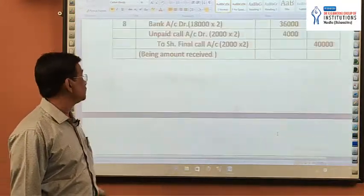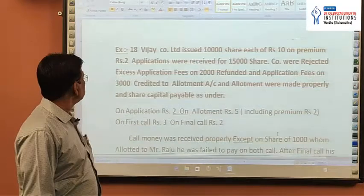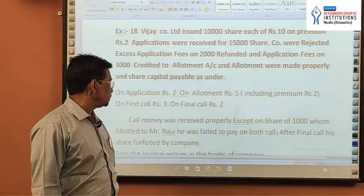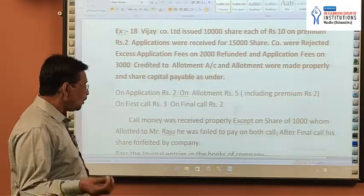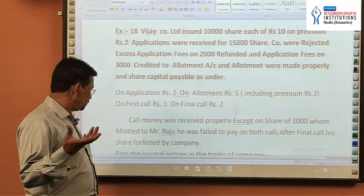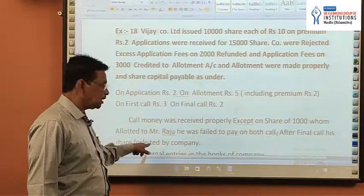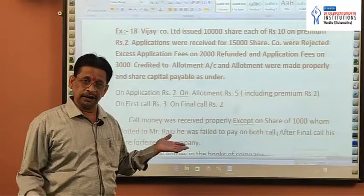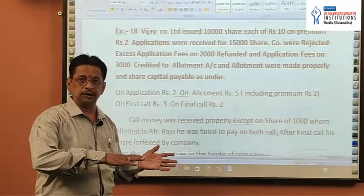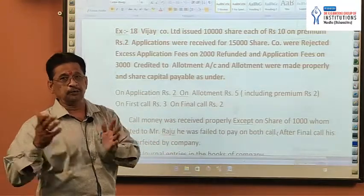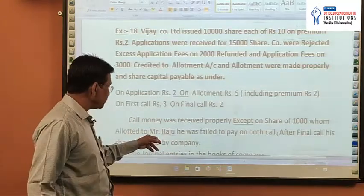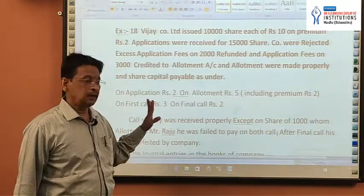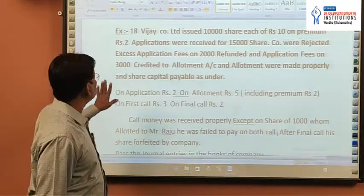So with that simple example complete, start the next example. In this example, one value is manually changed — that is, shares are forfeited by company. In the previous example there was no forfeiture, shares were not forfeited by company. In this example, shares are forfeited by company.